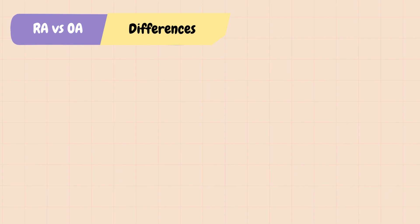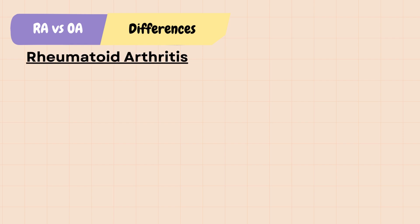Rheumatoid Arthritis vs. Osteoarthritis. Today, we will go over the differences between Rheumatoid Arthritis, RA, and Osteoarthritis, OA. I have separate videos on each topic if you want more details.